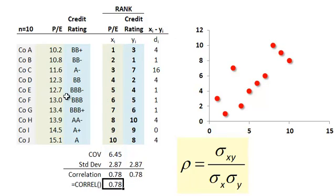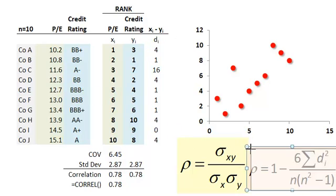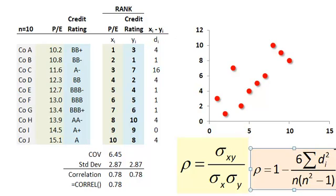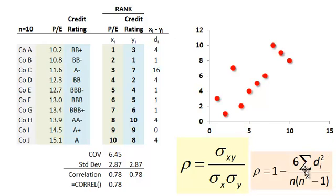Now, if there are no ties here between ranks, ties would happen if, say, company B and company E both had a double B rating. So that would be a tie. If there are no ties, the simpler version of this here is I can use 6 times the summation of the differences squared. So I've got the, right here, I've got the difference in rank. I square that. That's the D squared.